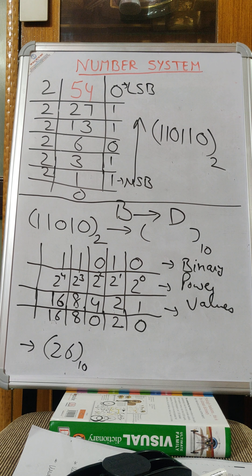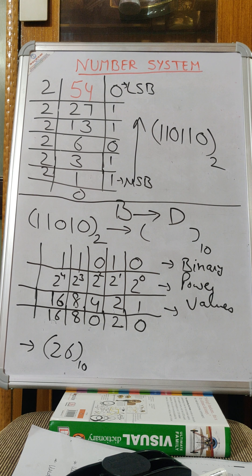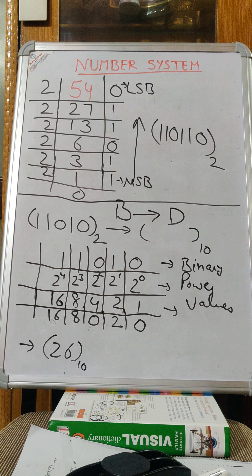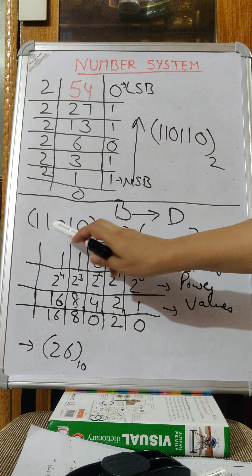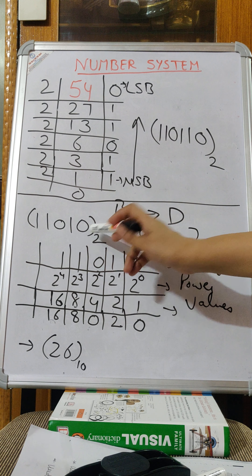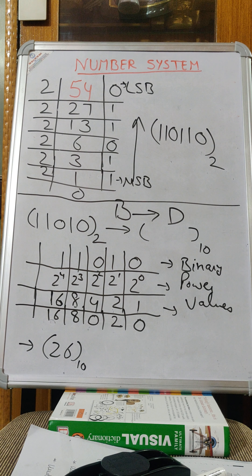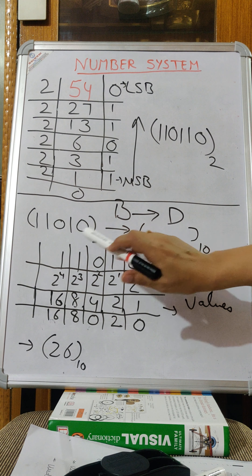Now we will learn another conversion: binary to decimal. Let's take a binary number. The base of binary is 2, and we use two digits, that is 0 and 1. Let's take the example 1 1 0 1 0. We can take any binary number — the base is 2. We need to convert this binary into decimal.